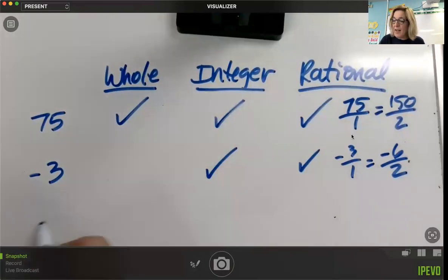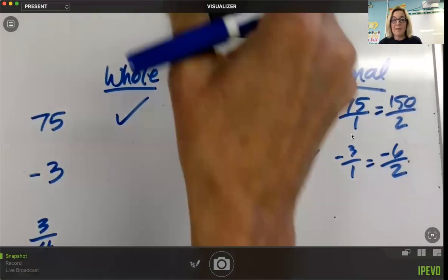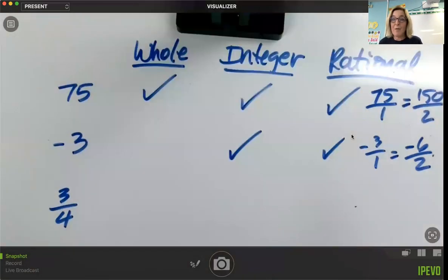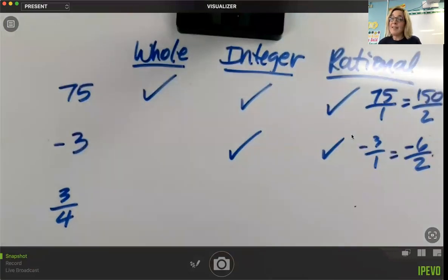All right, speaking of fractions, how about three-fourths? Three-fourths is also three divided by four. Is that a whole quantity? No, it's not. Is it an integer? Well, integers are whole numbers and their opposites. It would not classify as an integer either, but it would be a rational number because it is in fraction form.